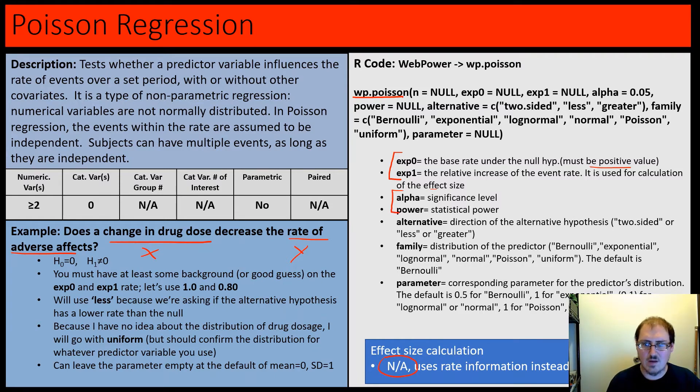We need alpha and power again, the tail of the test, and then that family and parameter for the x variable. For this example, the null is that a change in drug dose doesn't affect the rate of adverse effects, and the alternative is that it does. We have to have some background or guess on these rates. With nothing else happening, the rate is one. The relative increase - or in our case decrease - is 0.80, so it goes down by 20%. We'll use 'less' because we're asking about decreasing.